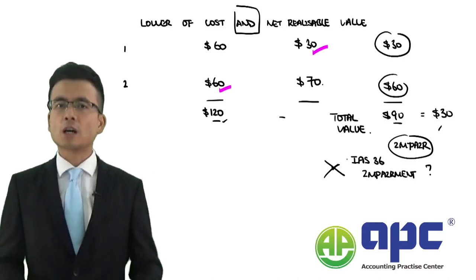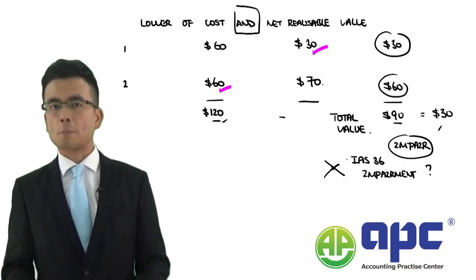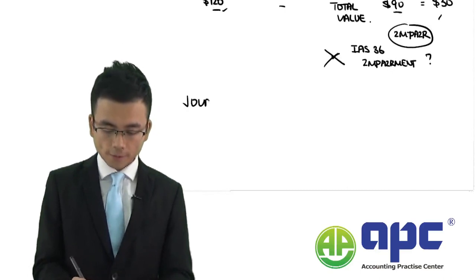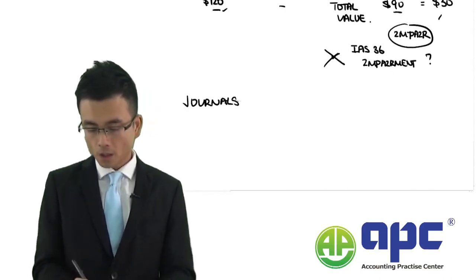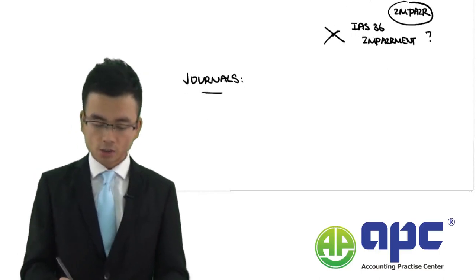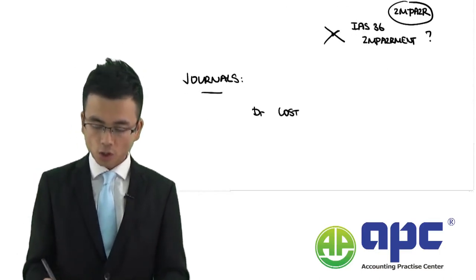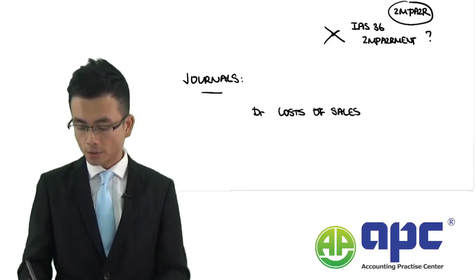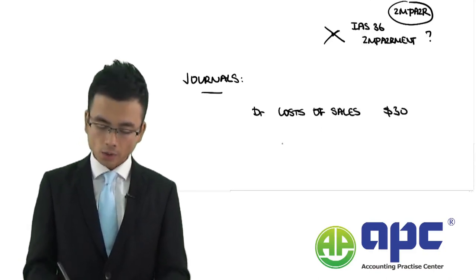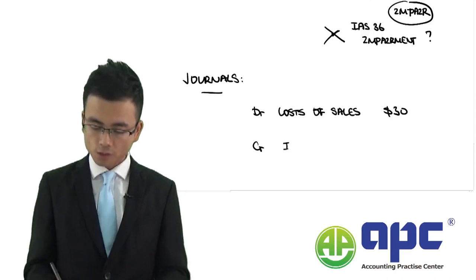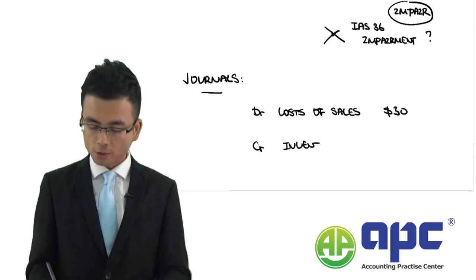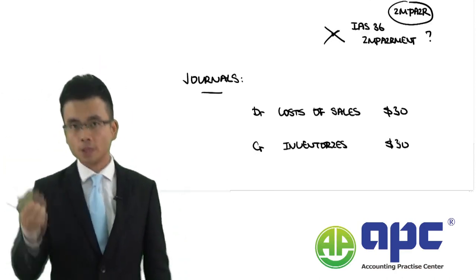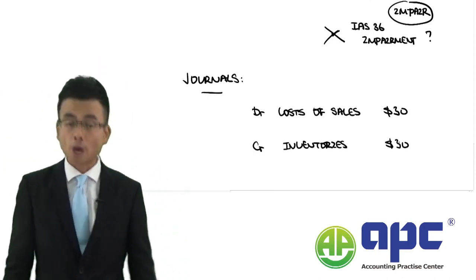How do we account for that $30 of inventories impairment? The accounting journals are: debit cost of sales $30, charging the impairment directly to profit and loss; and credit inventories $30 in the Statement of Financial Position, bringing down the current asset value by $30.